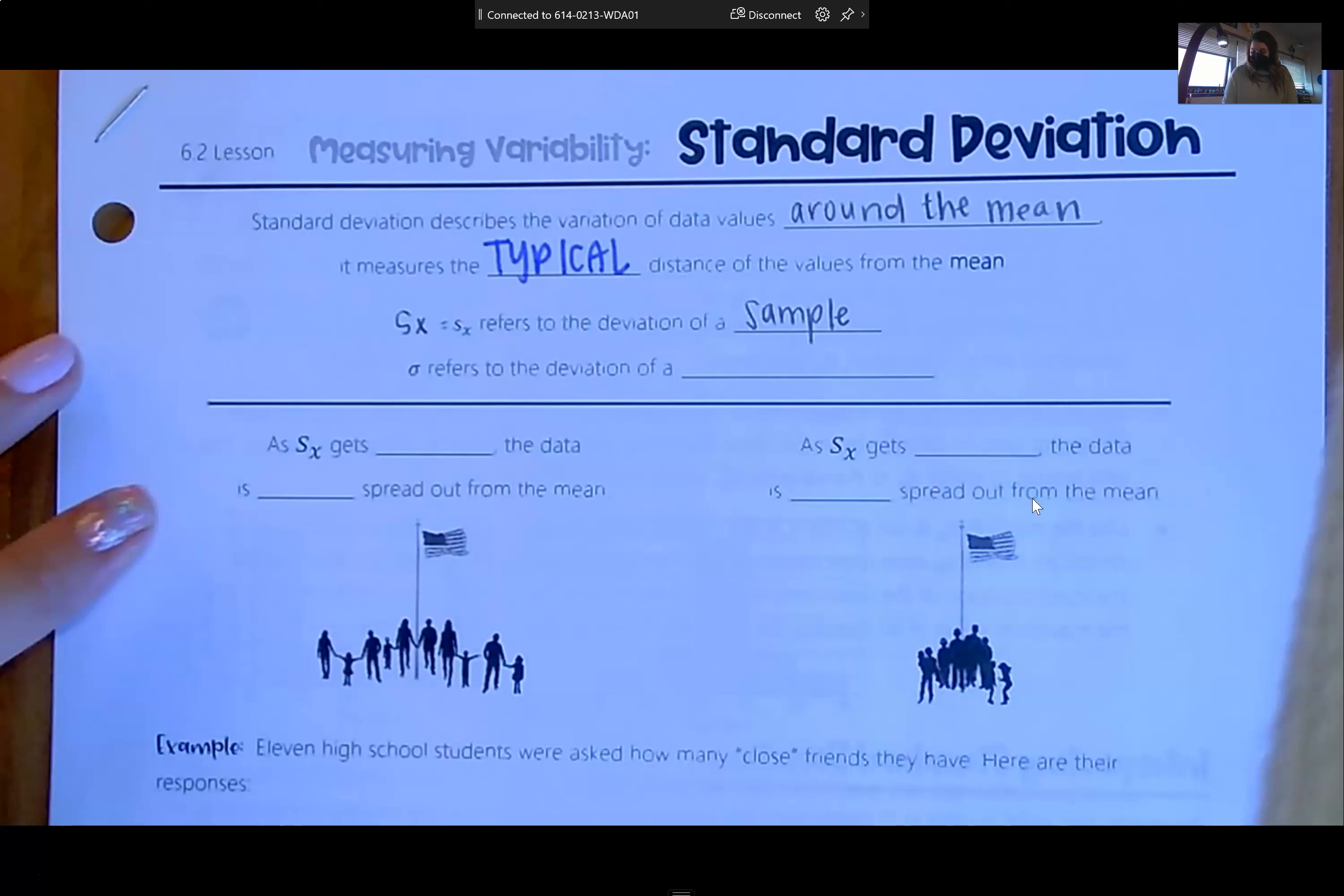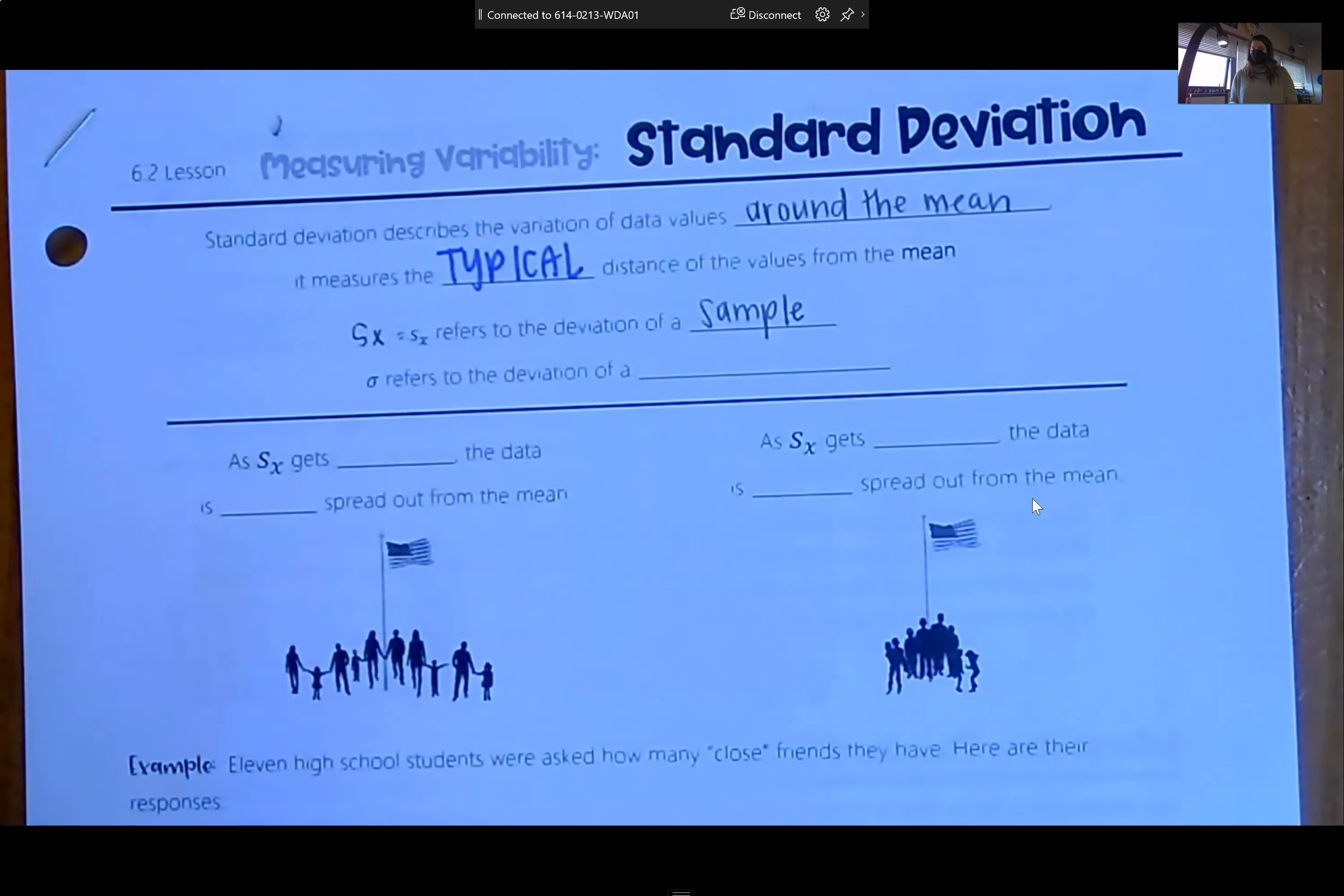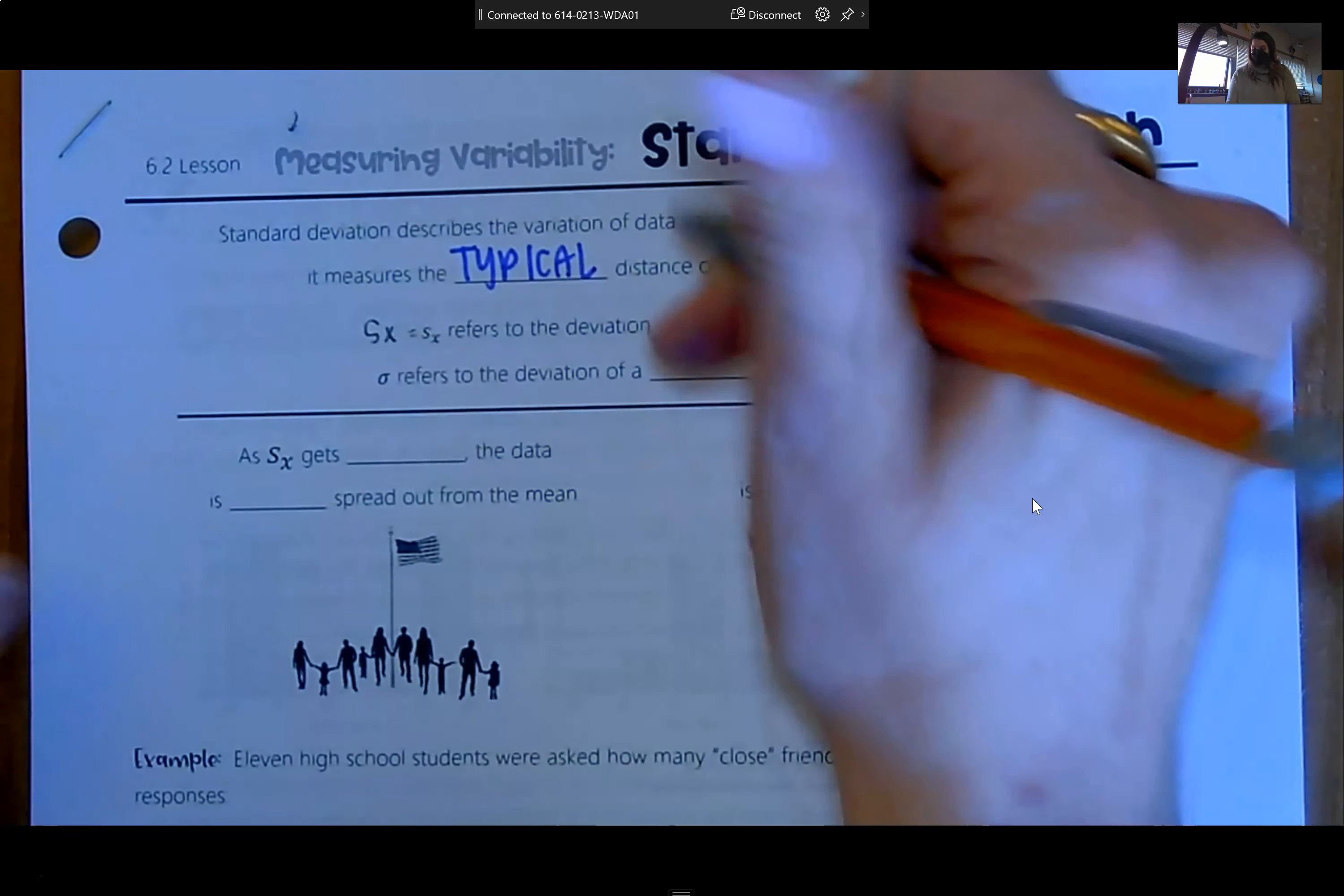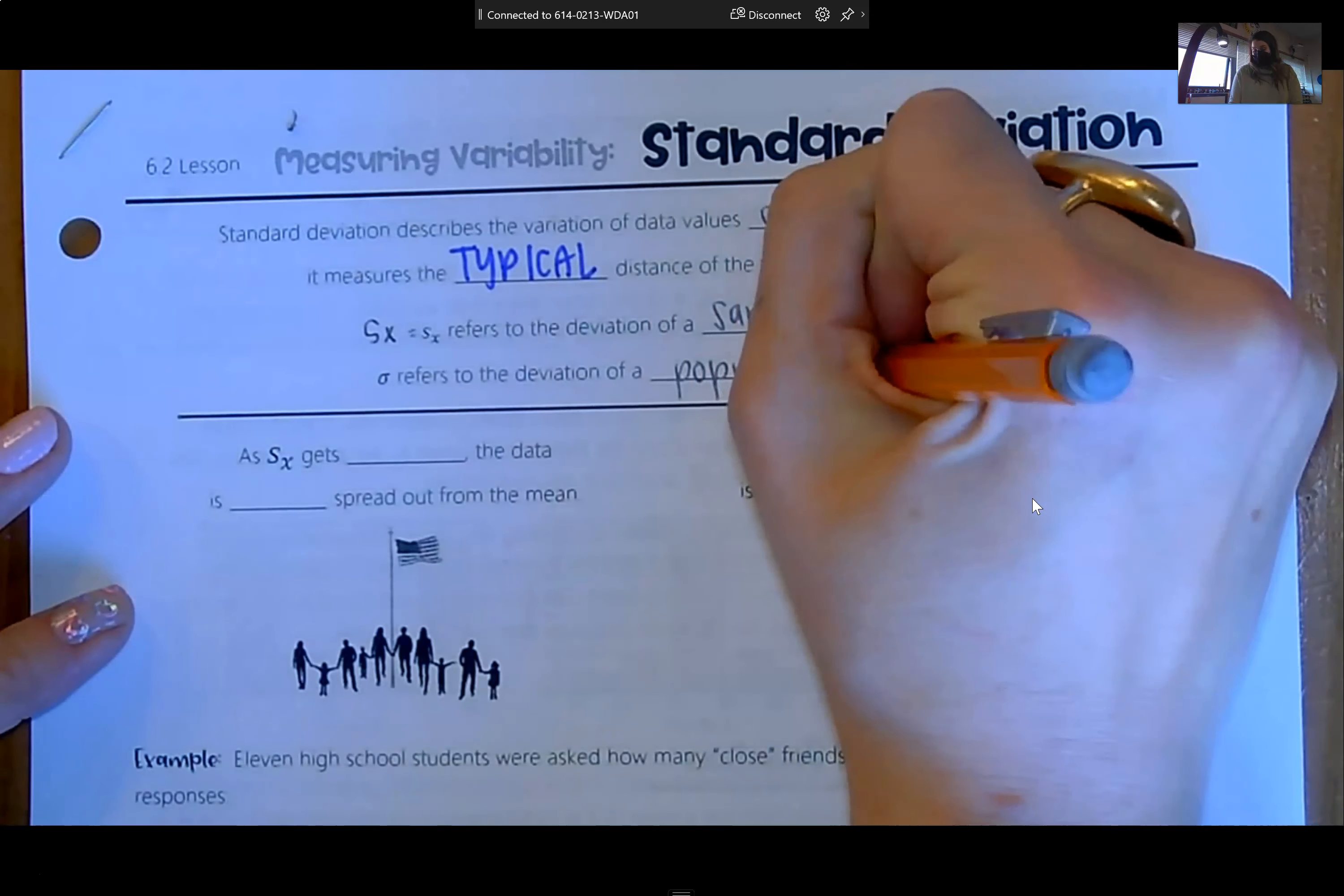Now, if you are able to actually get the entire population, so you are able to take data from the entire population, that's sigma. That's this little guy right here. In our next unit, we talk about sigma a lot. So sigma is the standard deviation of a population, and it is rare that we know that.